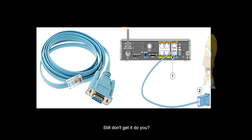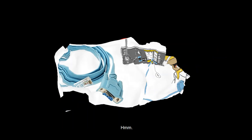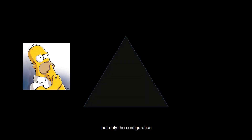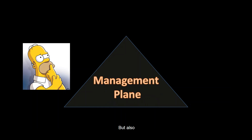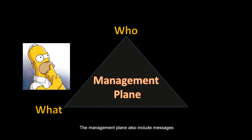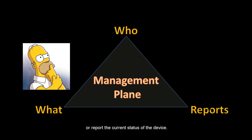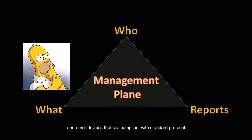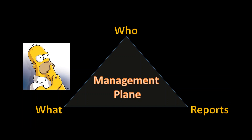The management plane includes not only the configuration of the system, but also who may access it and what they are allowed to do while they are logged in. The management plane also includes messages to or from a device that is used to maintain or report the current status of the device. In other words, these are the components used to manage the router, the switch, and other devices that are compliant with standard protocols such as SNMP, Telnet, SSH, NETCONF, and others.